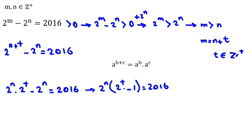This is the power of 2 in 2016, and this part is the odd part. Because t is a positive integer, 2 to the t is even, so 2 to the t minus 1 is odd. This is the odd part, and 2 to the n is the power of 2. So we should prime factorize 2016.